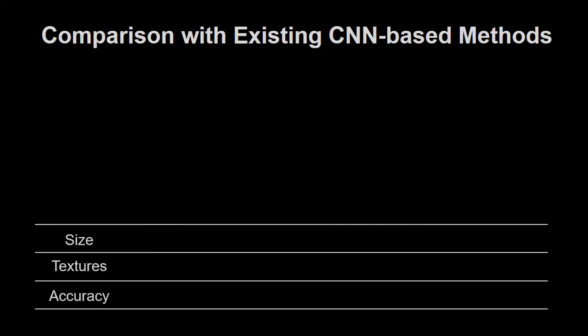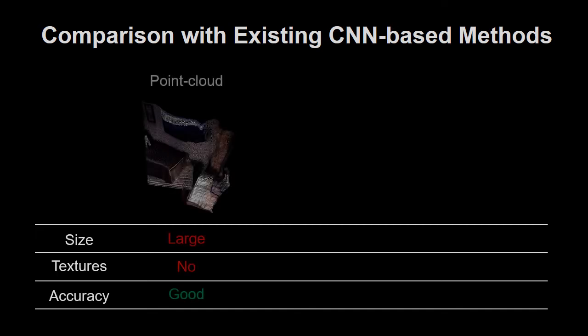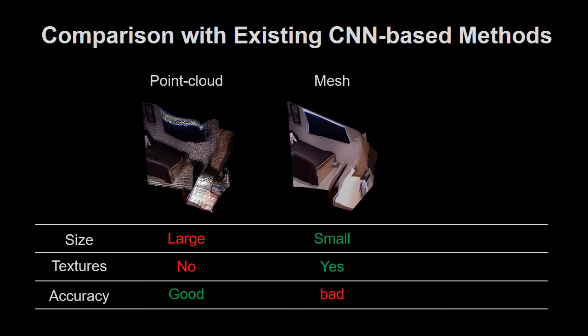In summary, point cloud has high expressive ability, but the size is too large and it cannot keep textures and surfaces. On the other hand, existing mesh is superior in size and textures compared to point cloud, but it's hard to express complex shapes.